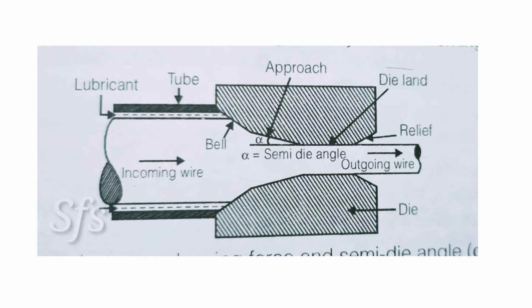After the approach angle, there is a flat surface in the die, which is called the die land. This die land decides the final cross-section area of the wire. After that, the opening of the die again increases, and this is called the relief.